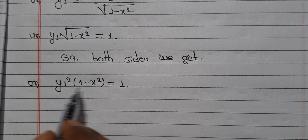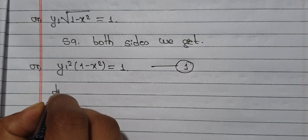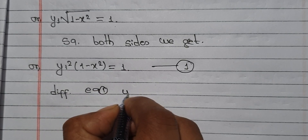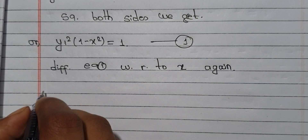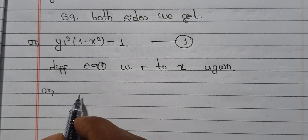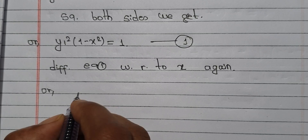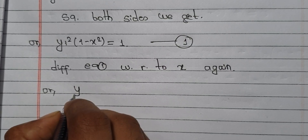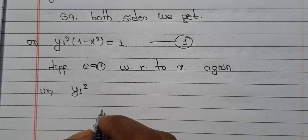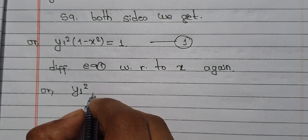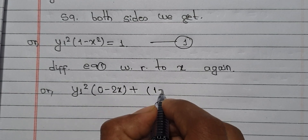Now from this we find the second double derivative. We differentiate again. In a previous video we discussed the derivative of a product u·v — calculating derivative of each part separately, keeping one constant and then the other constant. So we differentiate: y₁ squared and y₁ squared with respect to x.